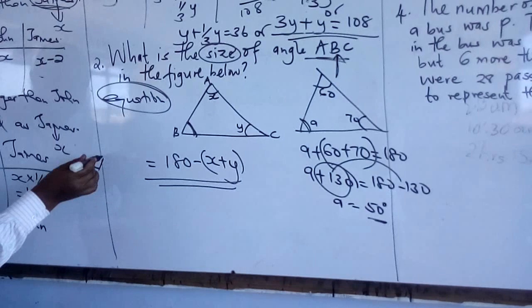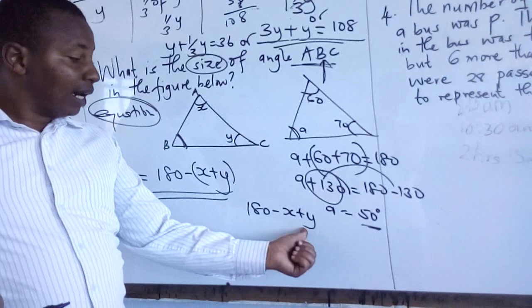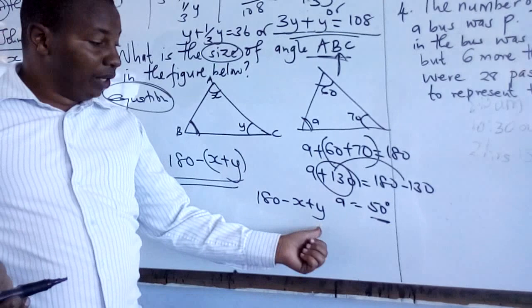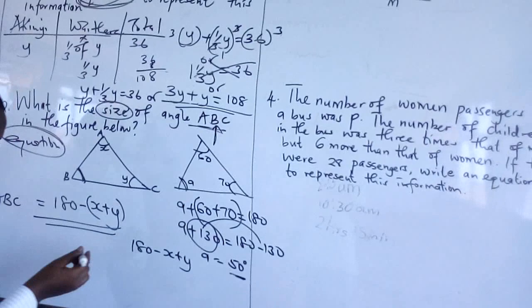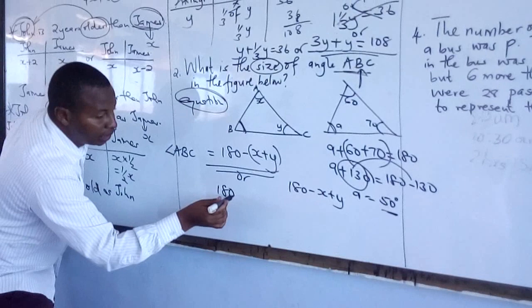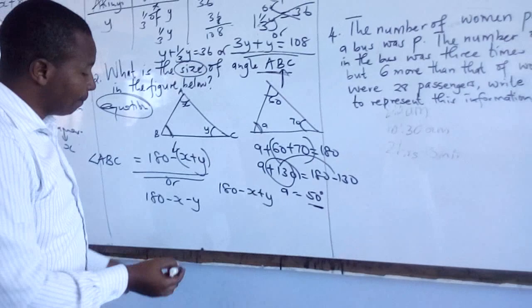For the general case with unknowns X and Y, the angle ABC equals 180 minus (X plus Y). Note: you cannot write 180 minus X plus Y without brackets, because without brackets the negative only applies to X and not Y. Alternatively, you can open the bracket: 180 minus X minus Y. These two forms are the correct answer.